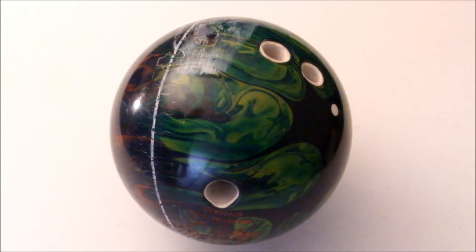In this video, I'd like to show you how to locate the bowler's positive axis point, or PAP. In the best case scenario, you would have the bowler bowl in fresh oil and use the oil marks on the ball.